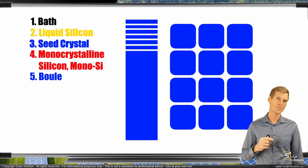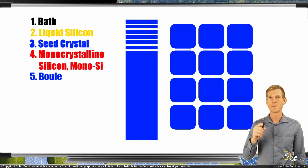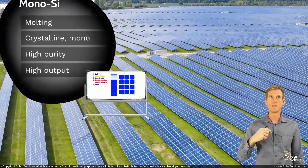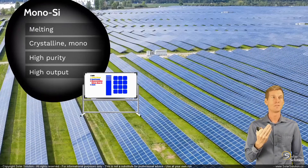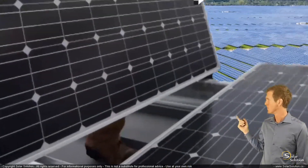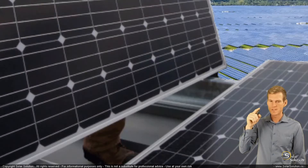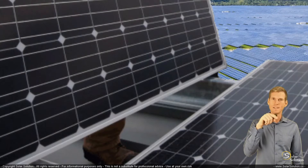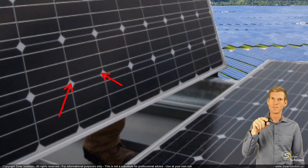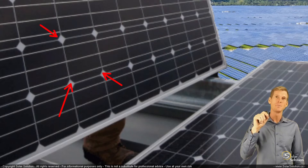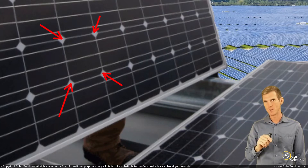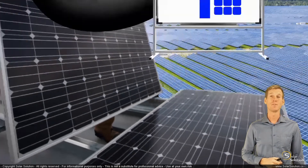Let's look at an example of a monocrystalline photovoltaic module. The rounded-off corners are a pretty good telltale sign of whether something is a monocrystalline or polycrystalline panel. You can see that the cells are not perfectly square — they've got these rounded-off corners. It's not an absolute indicator, but it's a very strong indicator that a specific module is actually a monocrystalline photovoltaic module.